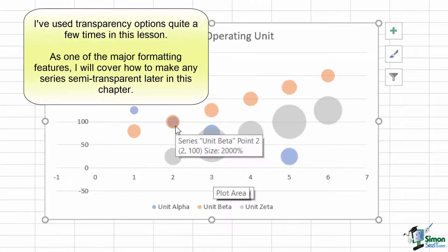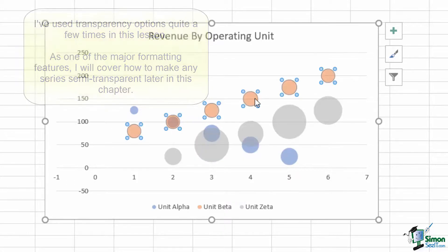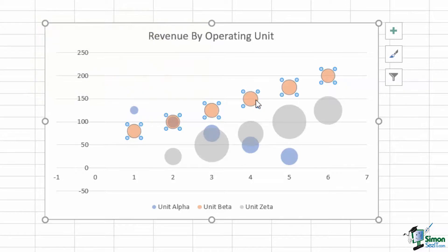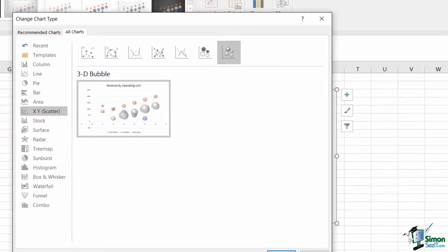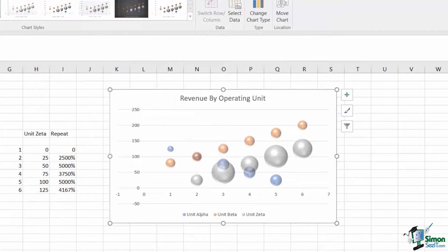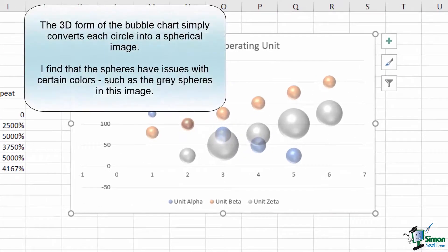We'll cover some of the more common customizations in more detail later this chapter, but for now, you can see that I've simply used a transparency setting. Finally, the bubble chart also comes in a 3D variety. This can be neat looking, but it provides no real additional value, and for this example, I think it actually obscures the chart a little bit.